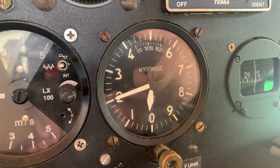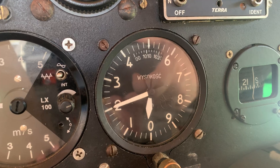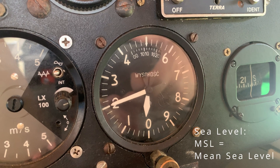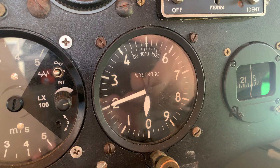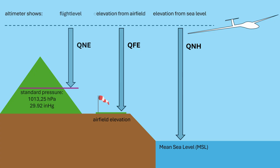All values on aviation charts refer to absolute altitudes — always relative to sea level. Every airfield and obstacle has its own fixed elevation. If the altimeter shows the airport elevation, you're on the ground. There's also a third setting, QNE, which refers to the standard pressure of 1013.25 hectopascals. This gives you your flight level, which is important in higher airspace.